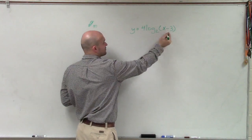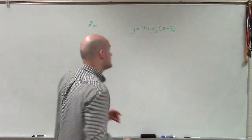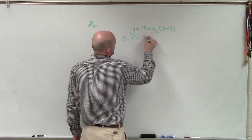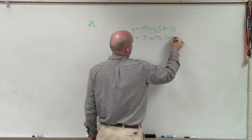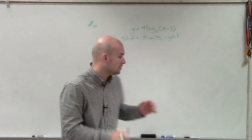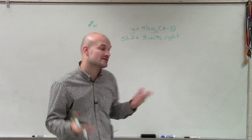So we understand that we have an x minus 3. So by applying the transformations of a function, we know that the graph is going to shift 3 units to the right. So that's going to be very helpful in understanding how our graph is going to be shifting along. And this 4 and 2, that's going to just affect how the graph is going to be increasing or decreasing.